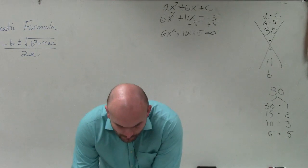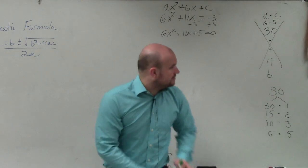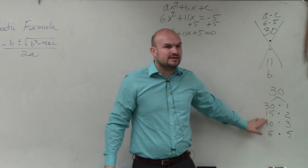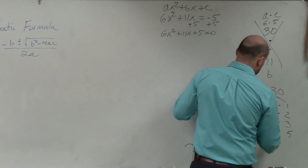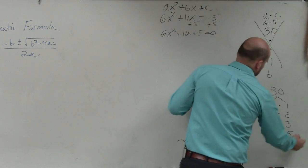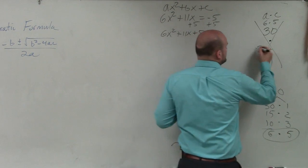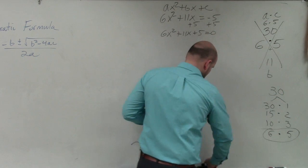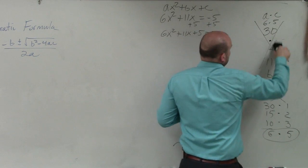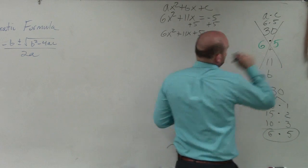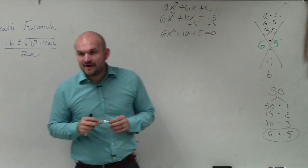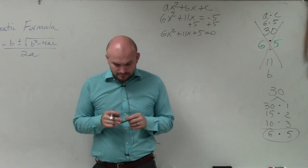Now, these two numbers multiply to give you 30, add to give you 11. What are my only two factors that do that? 6 and 5. So, you write 6 and 5. Does everybody follow with that? Yes.